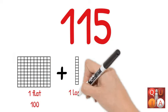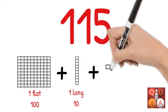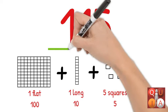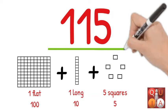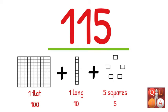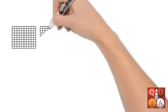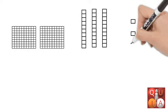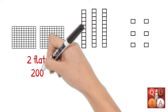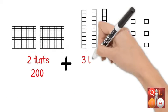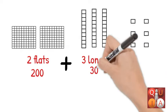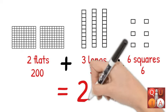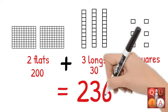1 flat plus 1 long plus 5 squares equals 115. What is the equivalent of the illustration? 2 flats plus 3 longs plus 6 squares equals 236.